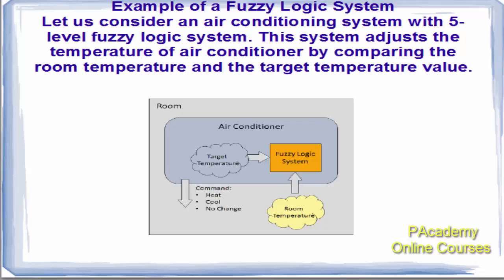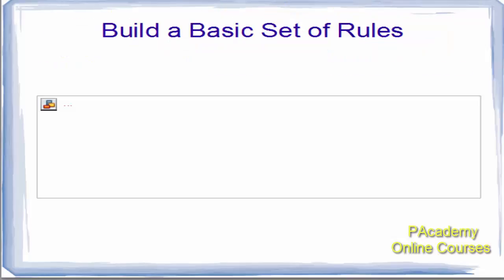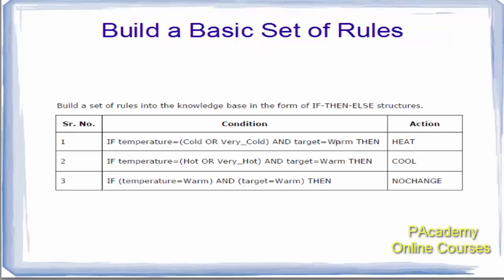As an example of a fuzzy logic system, let us consider an air conditioning system with a five-level fuzzy logic system. This system adjusts the temperature of the air conditioner by comparing the room temperature with the target temperature value. The fuzzy logic system will decide whether the room has to be made hot, cool, or no change.